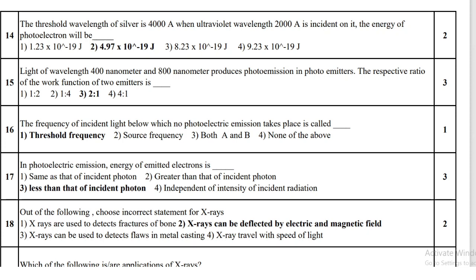Light of wavelength 400 nanometer and 800 nanometer produces photo emissions in two photo emitters. The respective ratio of work function of the two emitters is 2:1.